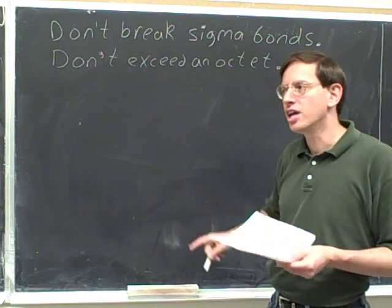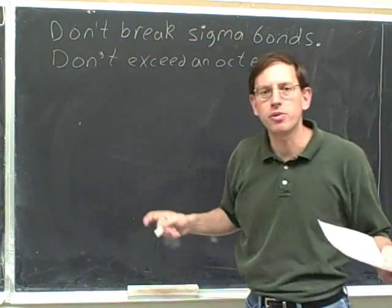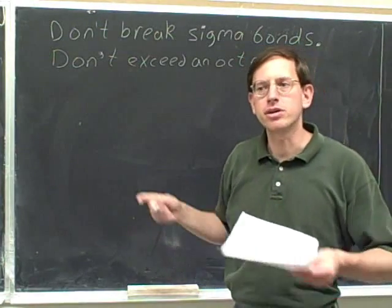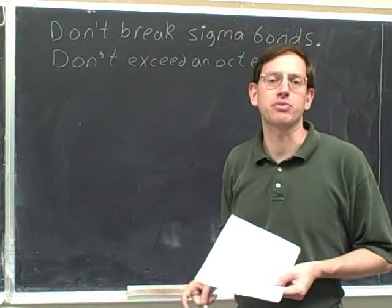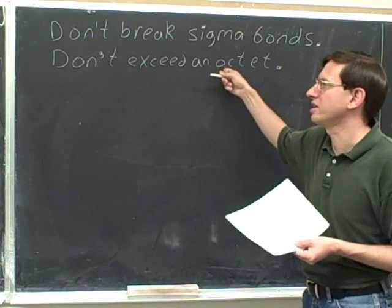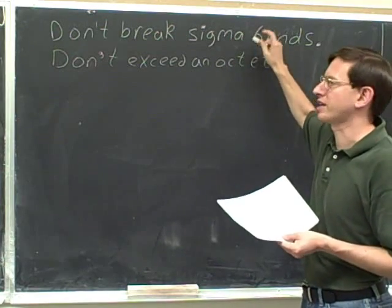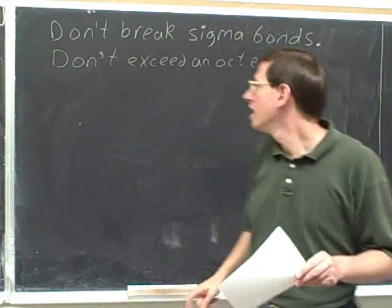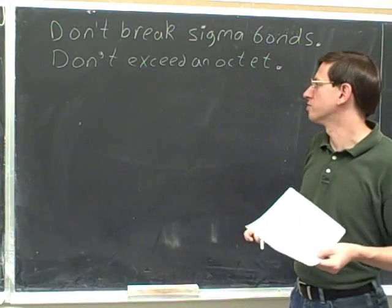If you've been paying close attention, you know there's one little exception: an atom in the third period or below could exceed an octet — we've even seen a couple examples of that. So this is not quite as hard and fast a rule. The rule 'don't break sigma bonds' never gets broken during resonance, but the octet rule can be broken if you're in the third period or below.